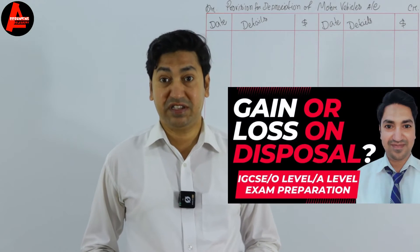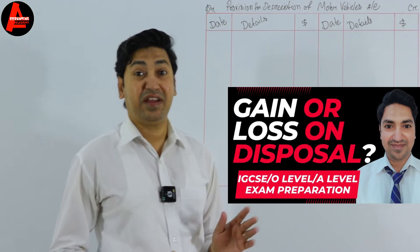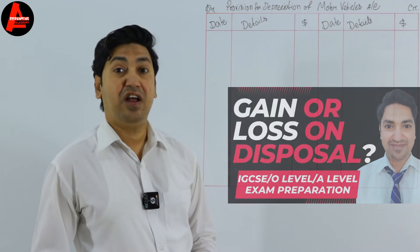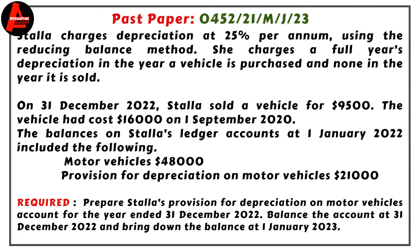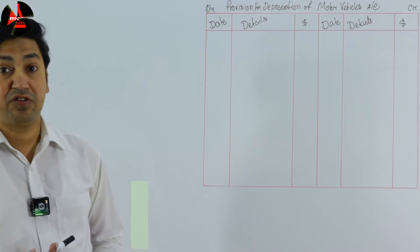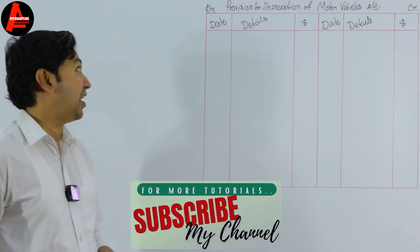We previously calculated the gain or loss on disposal — I recommend you watch that video first, otherwise many things will not be clear. I'll put the link in the description. The balance on Stella's ledger account on 1st January 2022 included: motor vehicles $48,000 and provision for depreciation on motor vehicles $21,000. These are the key figures from the question, and now we need to prepare this account.